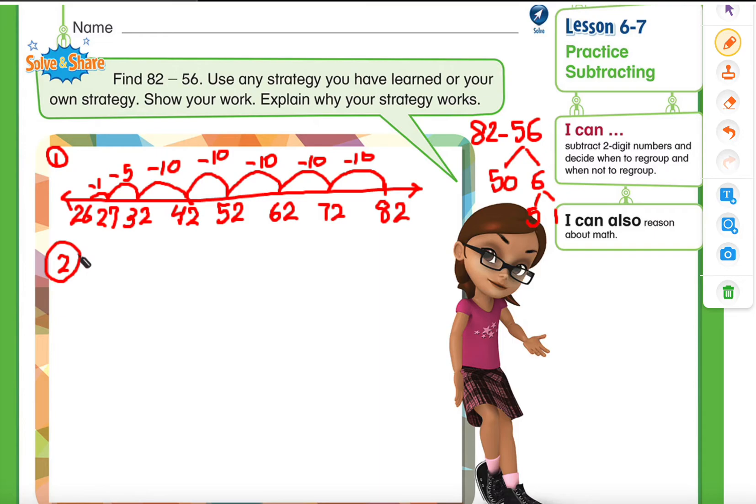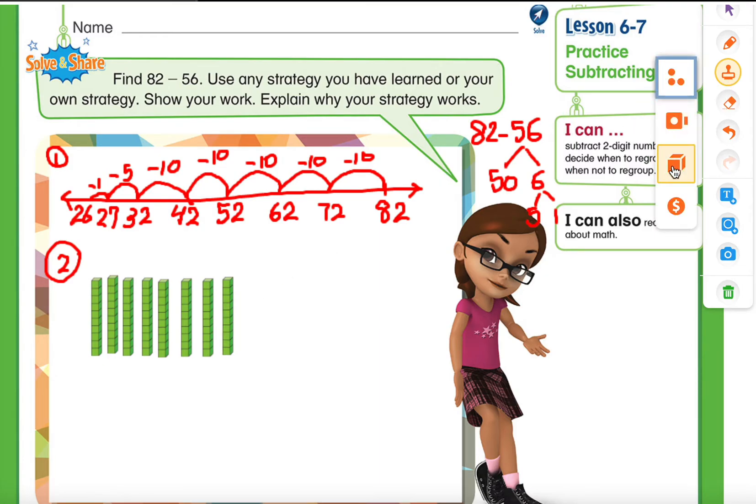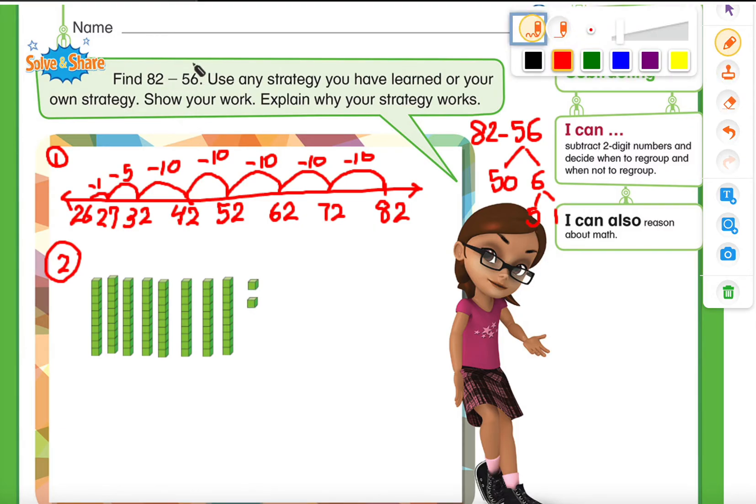Now let's take a look at the second strategy, and I am going to use the place value blocks to show that strategy. So strategy number two: using the place value blocks. So we have 82—10, 20, 30, 40, 50, 60, 70, 80—and I have two ones now: 81 and 82. Now I need to take away 56 out of it, but when I look at my ones I have only two ones. I cannot take away six ones out of two ones.